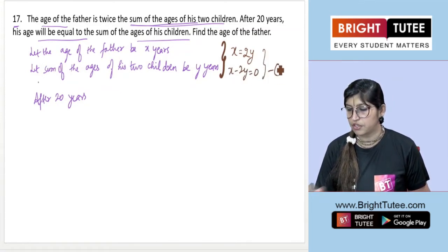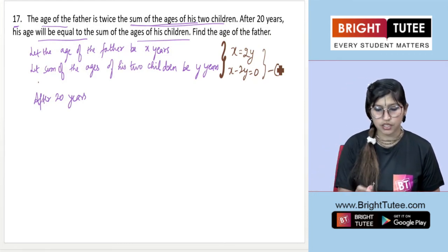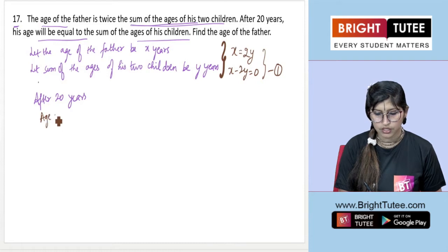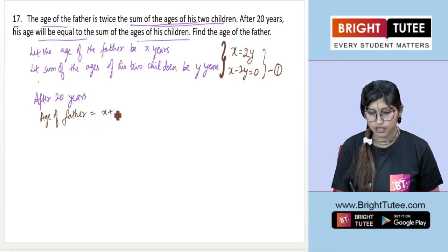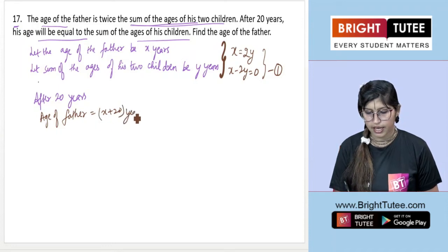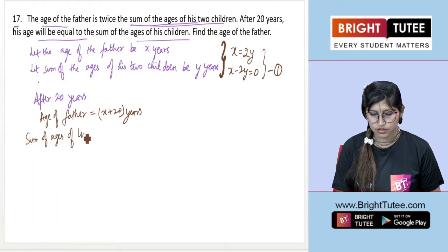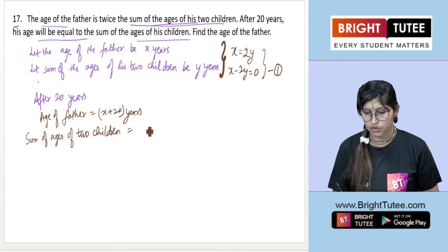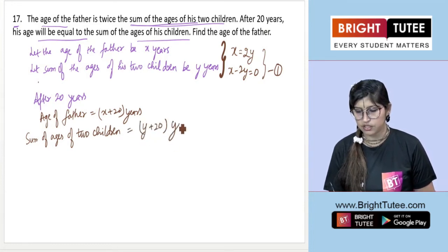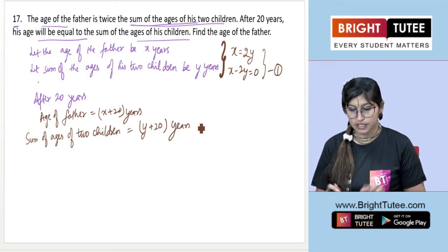Now we go ahead with after 20 years. After 20 years, the age of the father will be x plus 20 years. And the sum of the ages of the two children — what will that be after 20 years?